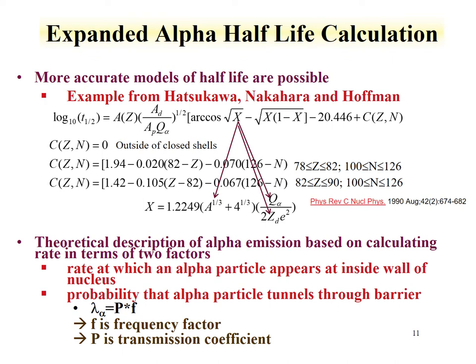One theoretical description to universalize alpha decay breaks the process into two factors. One factor is the rate at which an alpha particle appears inside the nucleus — a frequency factor for how often that alpha particle appears. Then there's the second factor: once that alpha particle appears, what's the probability of it getting through the nucleus? This is a transmission factor P. Taken together, the transmission factor and the frequency factor give us the decay constant for alpha decay.